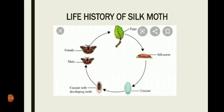The larva of a silk moth which produces the silk is actually the silkworm. The female silk moth lays eggs on the leaves of the mulberry tree. The eggs hatch to form a worm-like larva. The larva of a silk moth is known as caterpillar or silkworm, and it looks like an earthworm. These silkworms feed on the leaves of the mulberry tree and grow bigger in size.